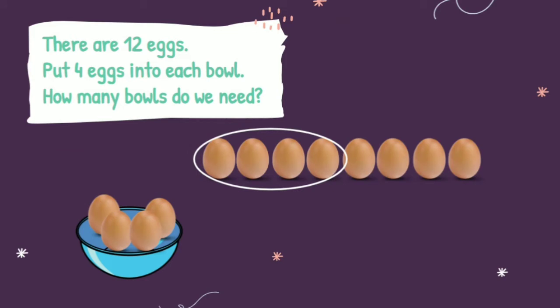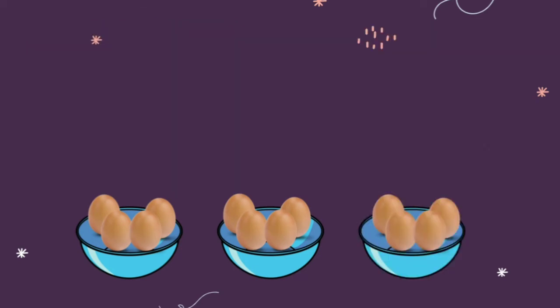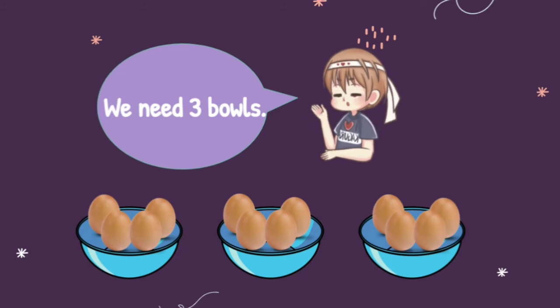Next, we take 4 eggs again and put them into the second bowl like this. Here we still have 4 eggs, which means we need one more bowl like this. We already done — you can count that we need 3 bowls, or 3 groups of eggs.